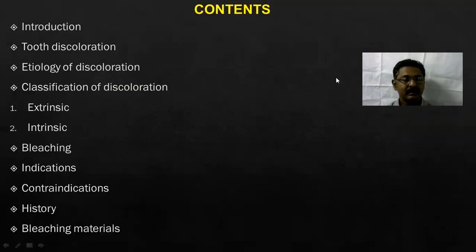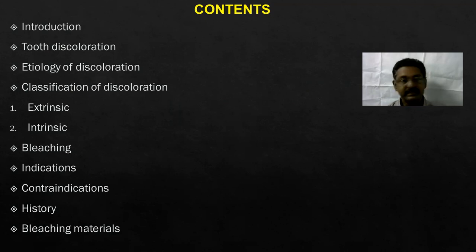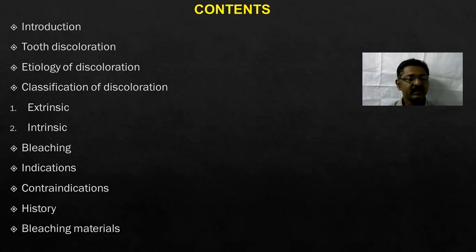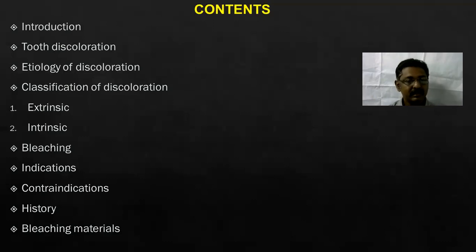So these are the contents. First, introduction, then tooth discoloration — that is the causes of tooth discoloration. There are different causes of tooth discoloration we will discuss. Then the etiology of tooth discoloration, classification of tooth discoloration. There are two types: extrinsic tooth discoloration and intrinsic tooth discoloration. Then the treatment modalities — there are different treatment modalities we do for tooth discoloration.